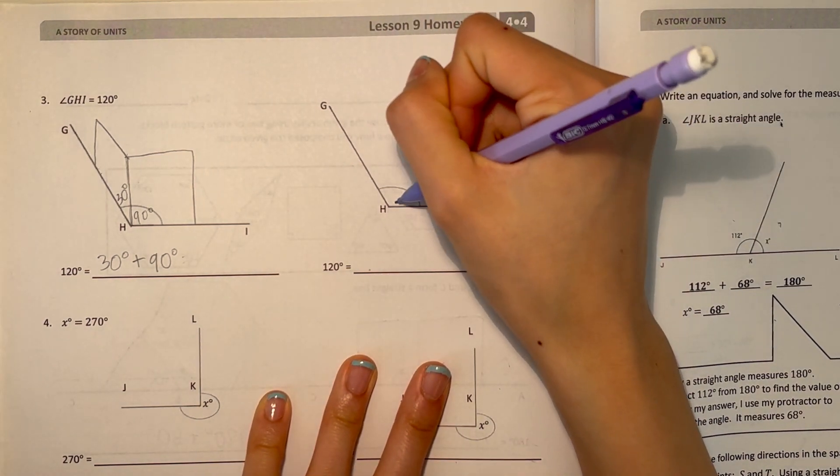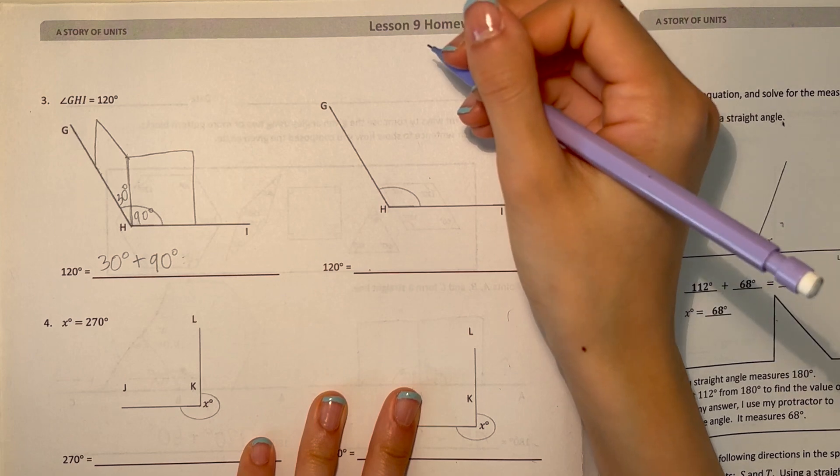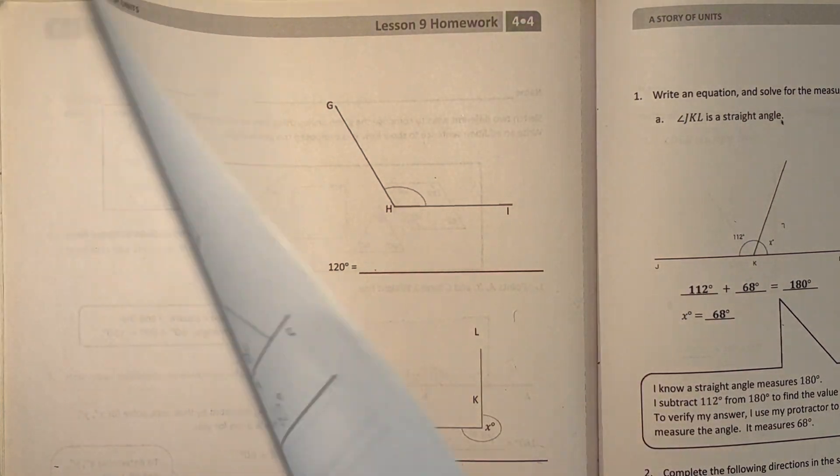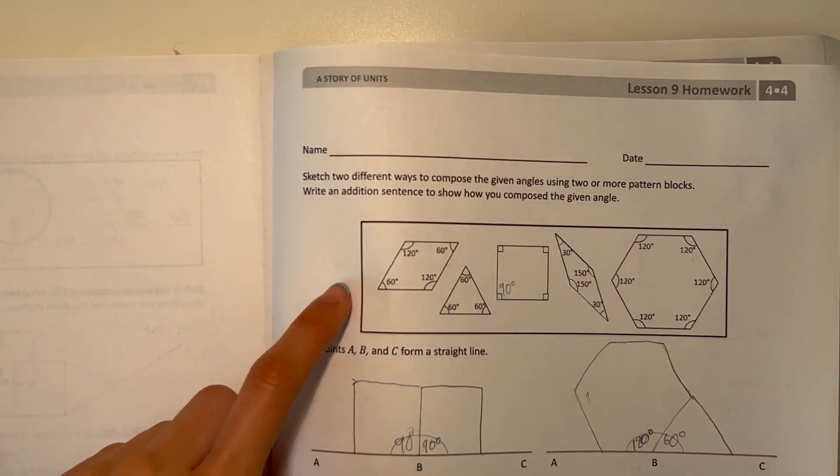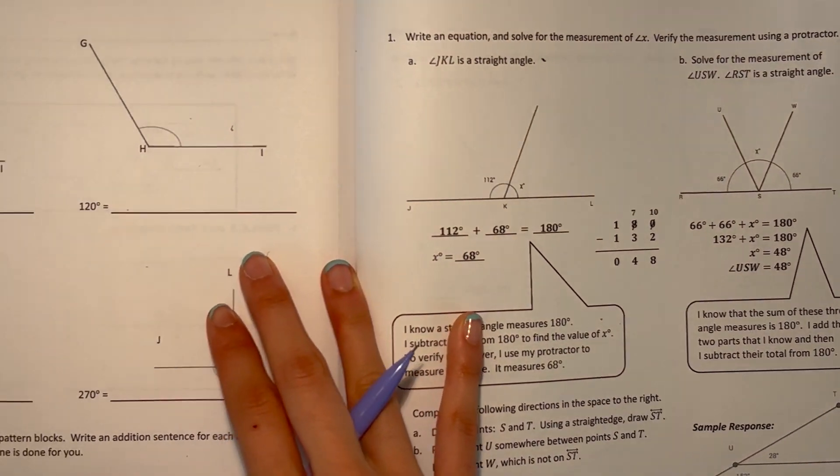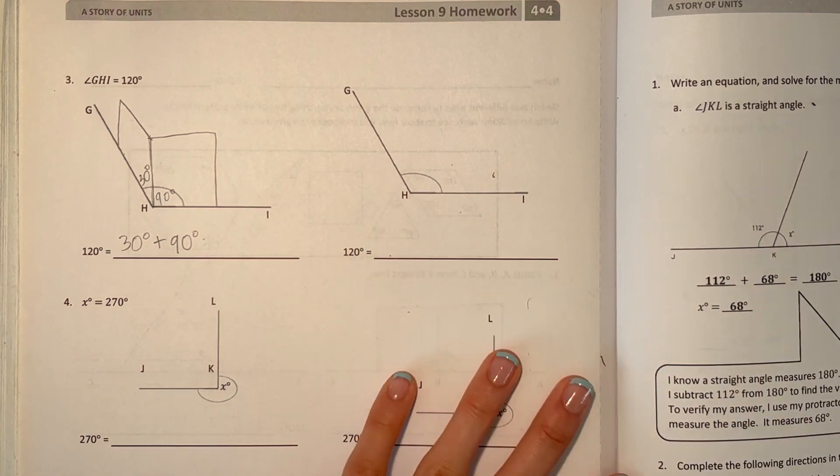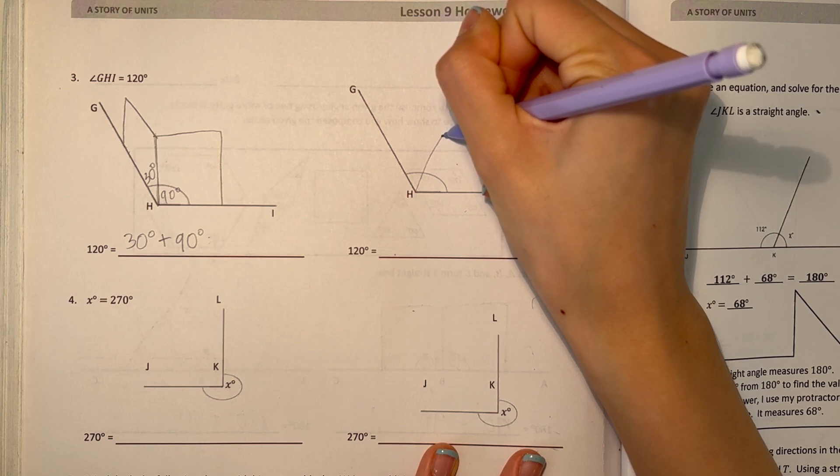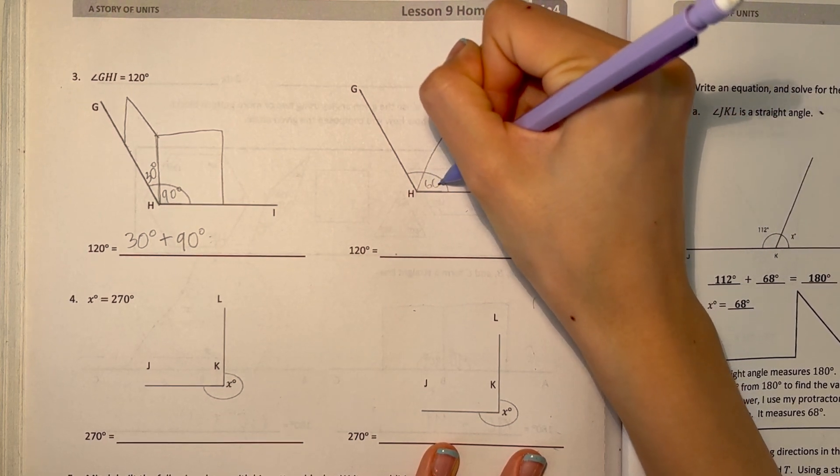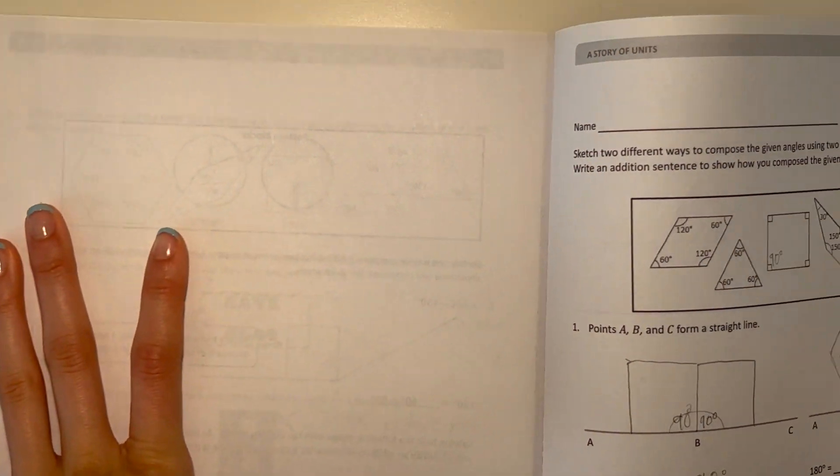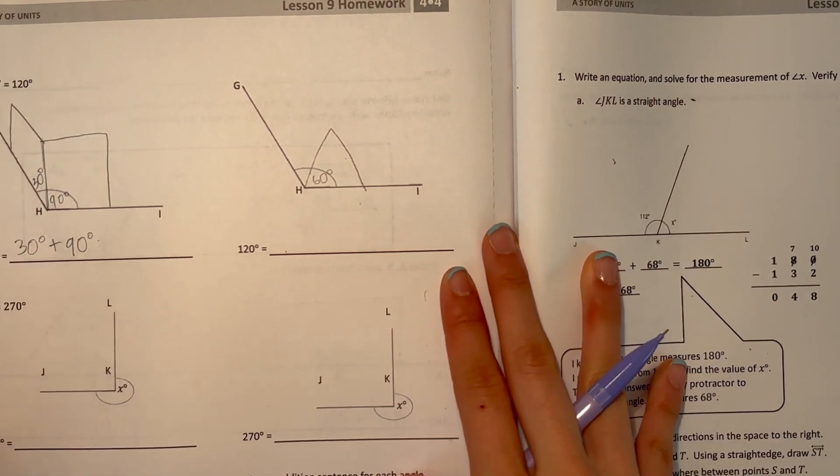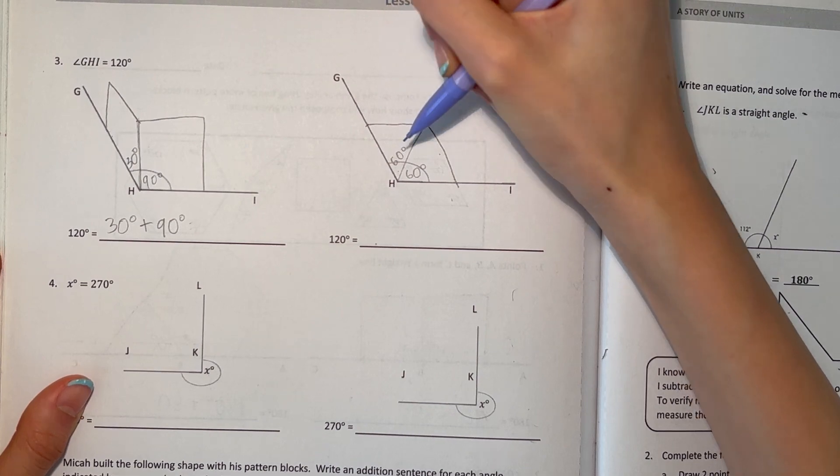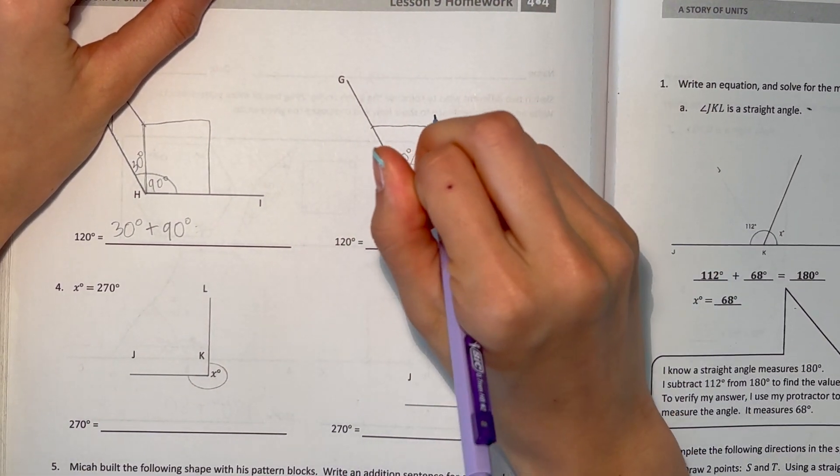Now another one we can do. We can go back to the pattern sheet so we can do something with that 60 degrees. We can put 60 here. This is 60 degrees. And if you look at the triangle, all the angles are 60 degrees. So we can put another triangle here. And this part would also be 60 degrees. And 60 plus 60 is 120.